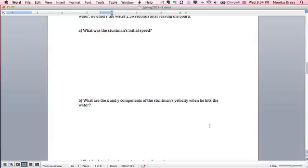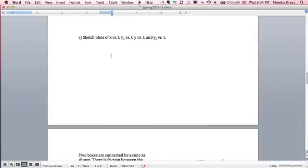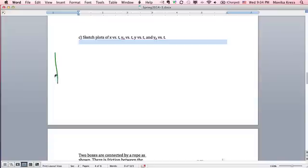The last part of the problem was where people had a little bit of difficulties. Let's just take a look at what these plots look like. The sketch of x as a function of time. Okay, so x starts at zero and linearly increases with time. vx starts at some positive number and just stays at that constant number. So there's vx as a function of time.